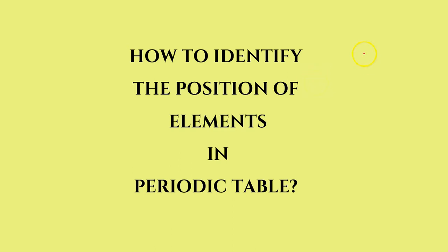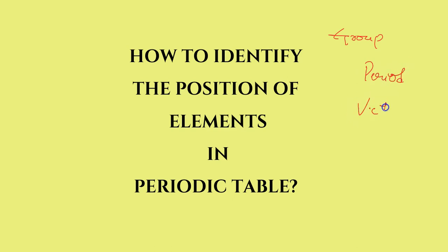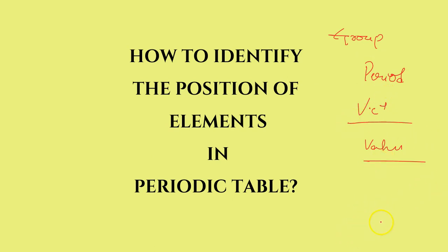For example, they will give you the atomic number and from there ask you to find the group number, maybe the period number, the valence electrons, valence shell, and many more. We are going to talk about how to identify the position right now, and we will talk about determining the other parameters in a later video.